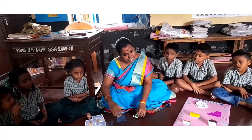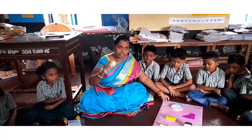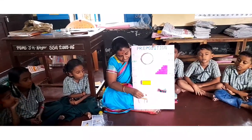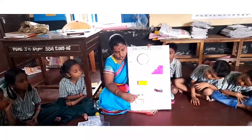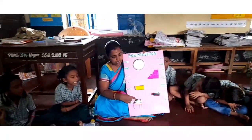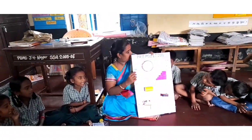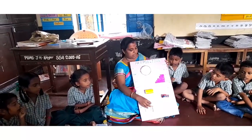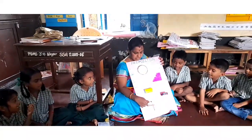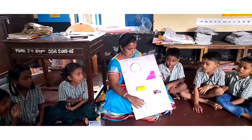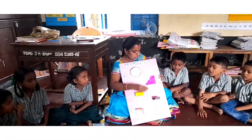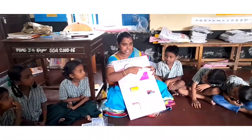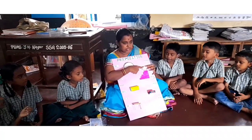Did you understand, children? Now, you are going to tell me where is the rat. Where is the rat? On the table. The rat is on the table. Where is the rat? The rat is on the stairs. On the stairs.